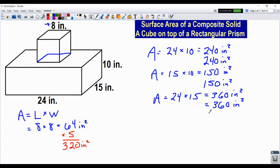So now I'm going to draw my line and I'm going to do the math. We add down. So we have 240 plus 240 plus 150 plus 150 plus 360 plus 360. And that's going to give us 1,500 inches squared.